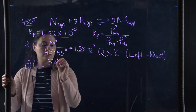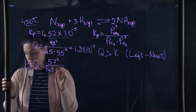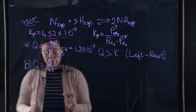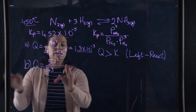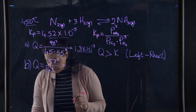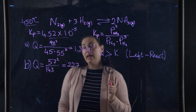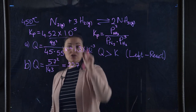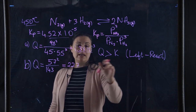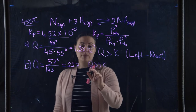For part B, Q equals (57)² divided by (143) × (0)³ — there is no H₂ remaining. Calculating this gives Q = 22.7. This Q is much, much larger than K = 4.52×10⁻⁵.